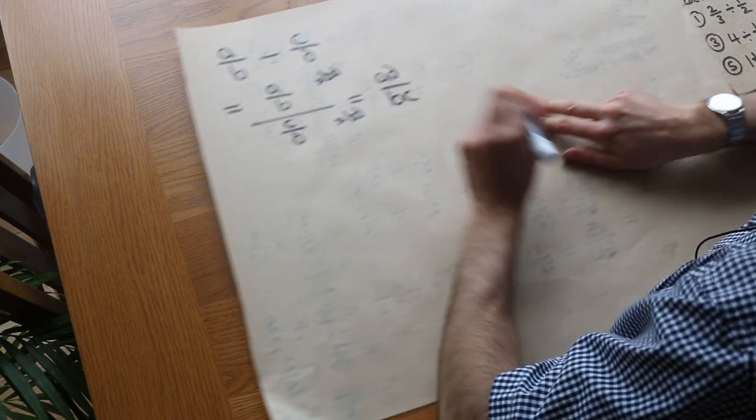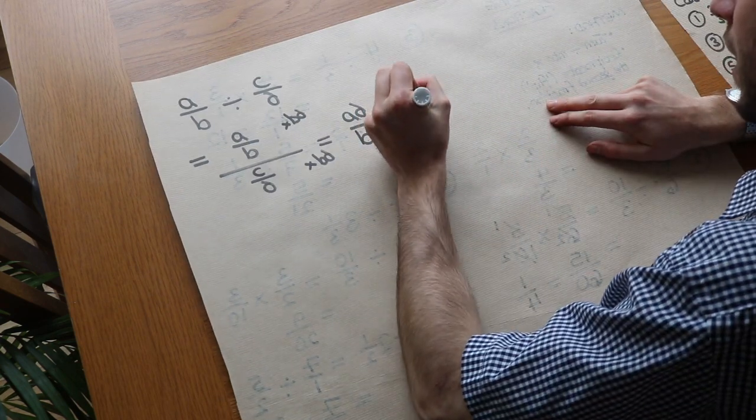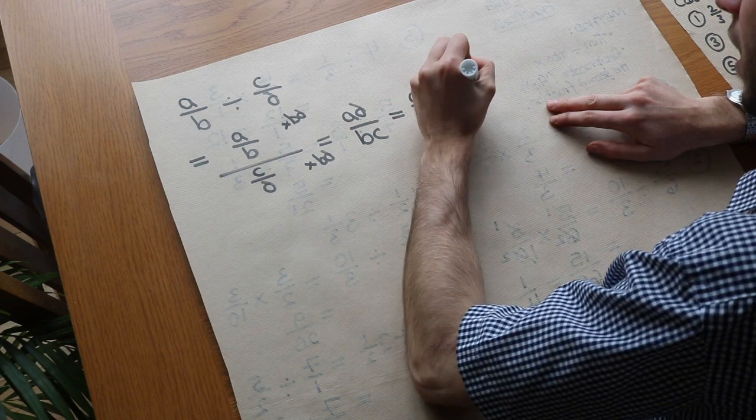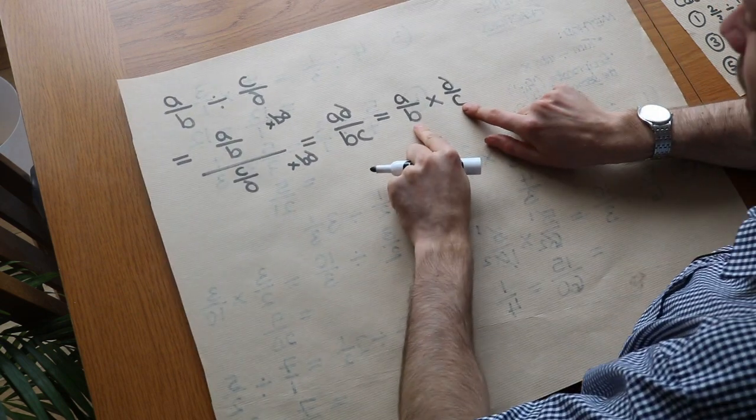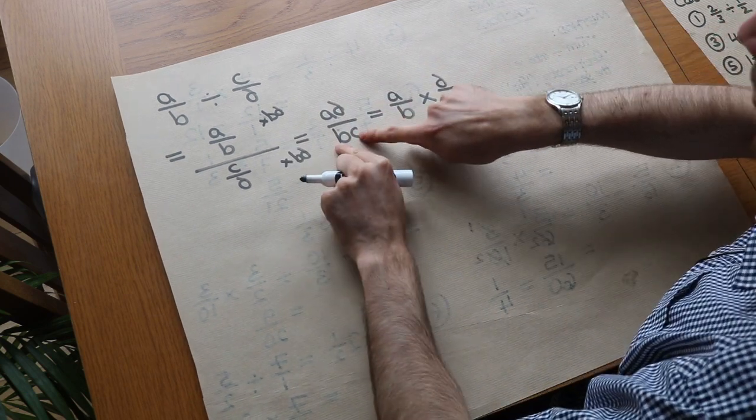But we could write that as a/b multiplied by d/c, because can you see if I multiply these fractions I get ad at the top, which I do, and I get bc at the bottom, which I do.